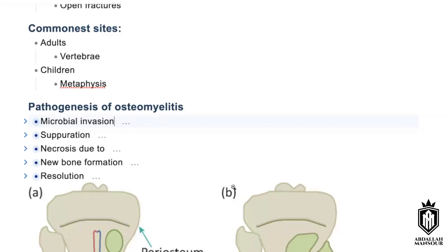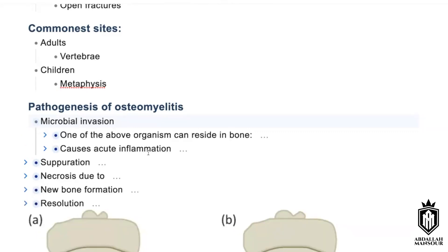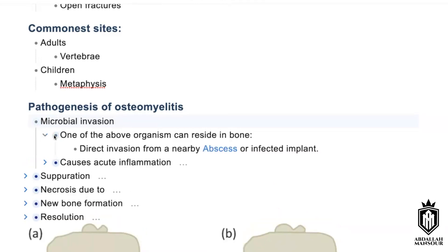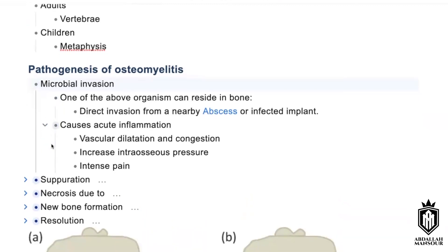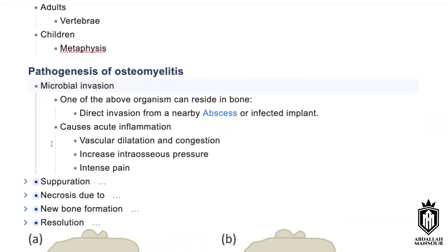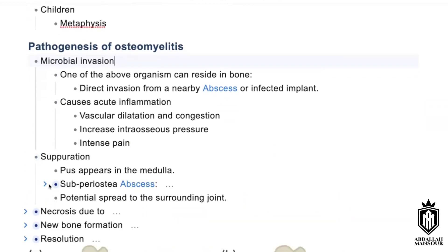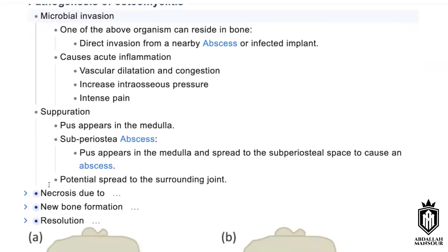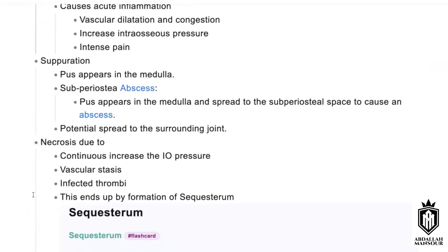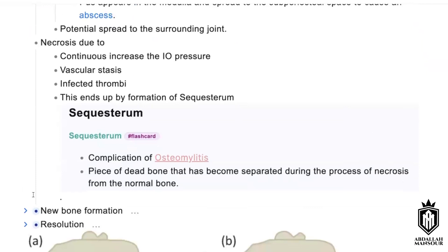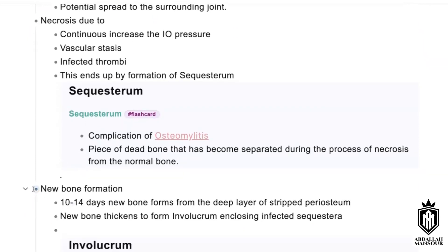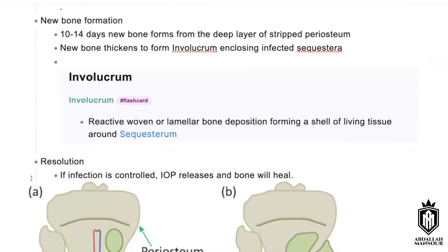If you want to explain further, in an exam setting you can speak confidently like this: one — microbial invasion: entry of organisms into tissue forming an abscess, causing acute inflammation with vasodilatation; two — suppuration: pus formation and subperiosteal abscess causing severe pain; three — necrosis: due to rising intraosseous pressure, leading to formation of a sequestrum; four — new bone formation: called the involucrum; five — resolution. That's signposting.